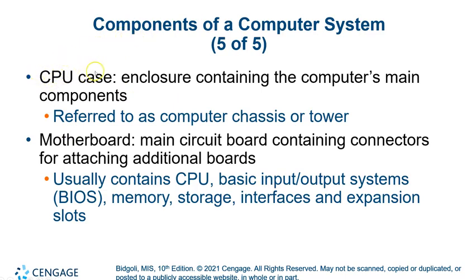The CPU case is where everything is contained — whether you have a tower or a laptop, there are many different shapes and sizes. Inside is something called a motherboard, which is the main circuit board. If your motherboard breaks, you're pretty much out of luck. Inside you'll find fans, the CPU itself, memory, storage, and expansion slots where you can add more capability. These are the fundamental parts of the computer system, and bigger computers simply have more capability. That wraps up the first part of Chapter 2 — we'll continue in a second video.